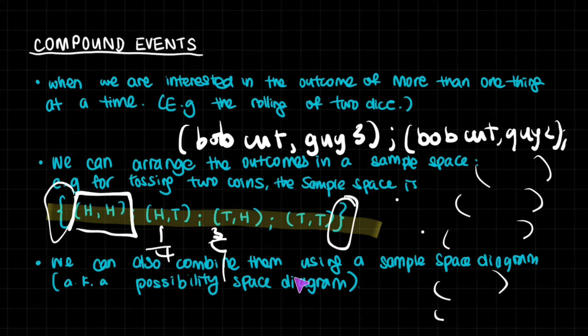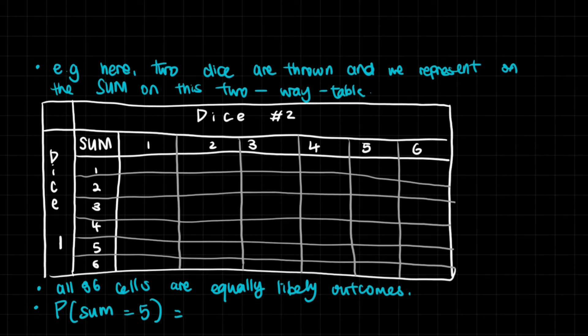Now we can also combine them using a sample space diagram, aka a possibility space diagram. So we can look at this sample space diagram. Now we're not talking about coins anymore, we're talking about dice. Here, two dice are thrown, and we represent the sum on this two-way table.